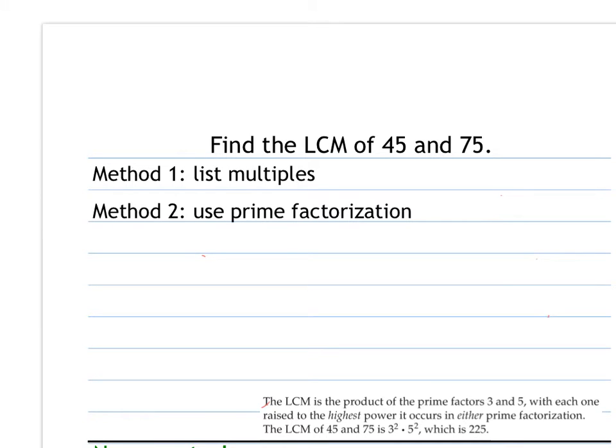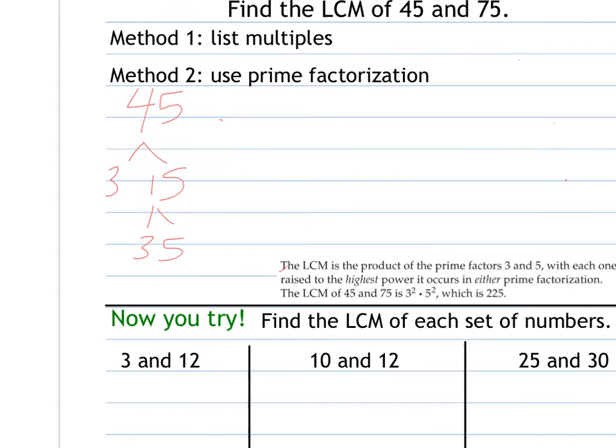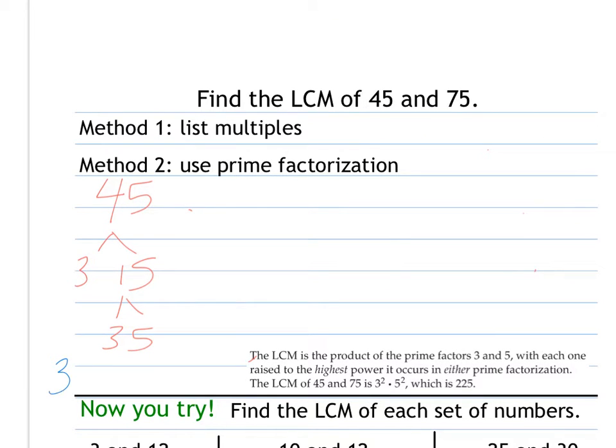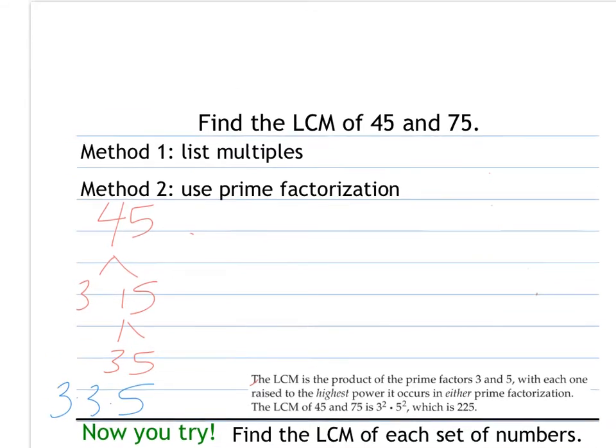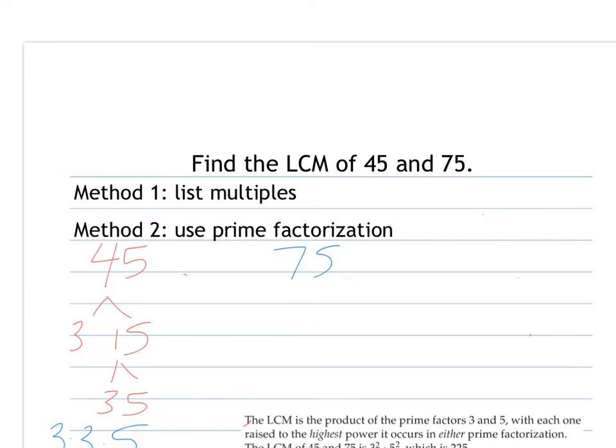So now we're going to find the least common multiple of 45 and 75. You can use the method of listing the multiples, or the method of using prime factorization. Right now I'm going to go with prime factorization, because I think that's the one that's a little bit trickier, and so I want to show that again. If I have 45, I have 3 and 15, which is 3 and 5. If I have 75, that's 3 and 25, which is 5 and 5. So my prime factorizations are 3 squared times 5, and 3 times 5 squared if I write them out using exponents.